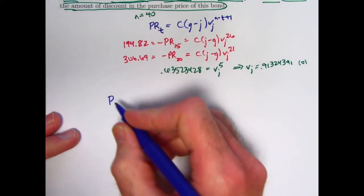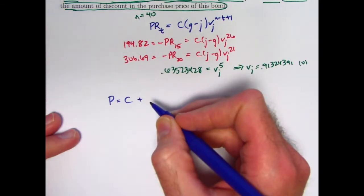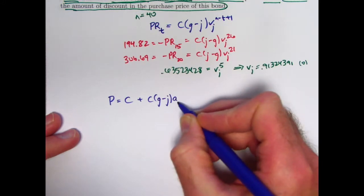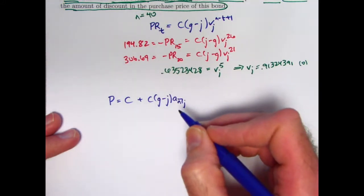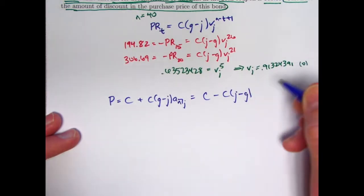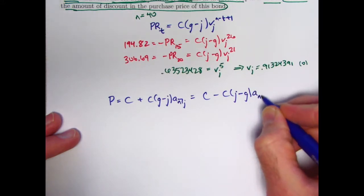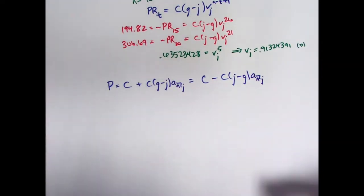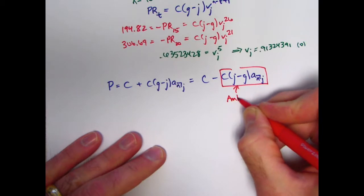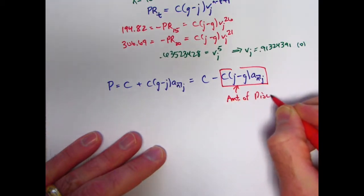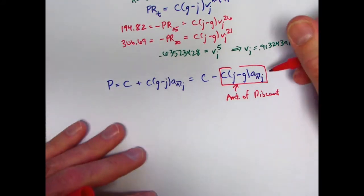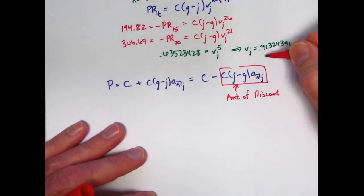Think about the purchase price of the bond, which is going to be less than the redemption value C. We can write that purchase price in terms of the premium discount formula involving C, the redemption value, and g, the modified coupon rate, in this way. When the bond's bought at a discount, j is bigger than g, so this is negative. I could also write it this way in terms of our new quantity, C times j minus g. And then I would be subtracting a positive quantity, still making P, of course, less than C. And it's really then this thing right here that we're after. That's the amount of discount. That will be the answer to the problem. So that is telling me that certainly finding C times j minus g will be helpful. Then I just have to find a_n. Certainly, v to the n will be easy to find, where n is 40. What about j?